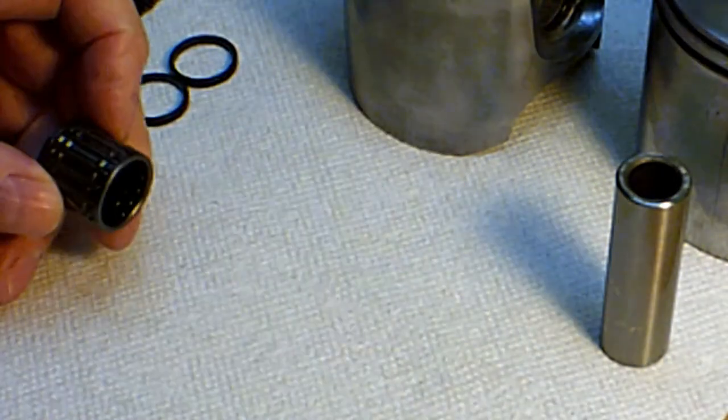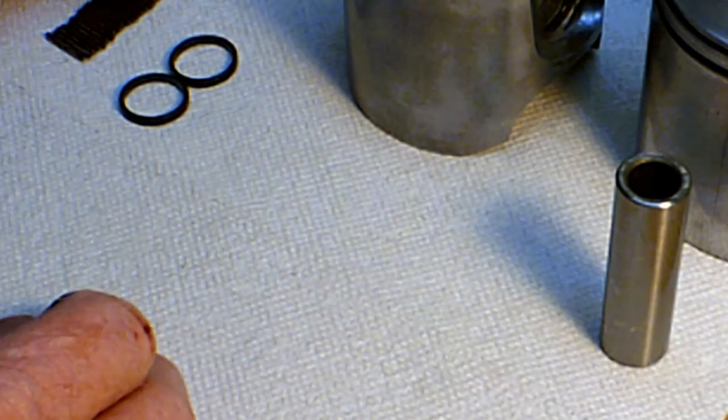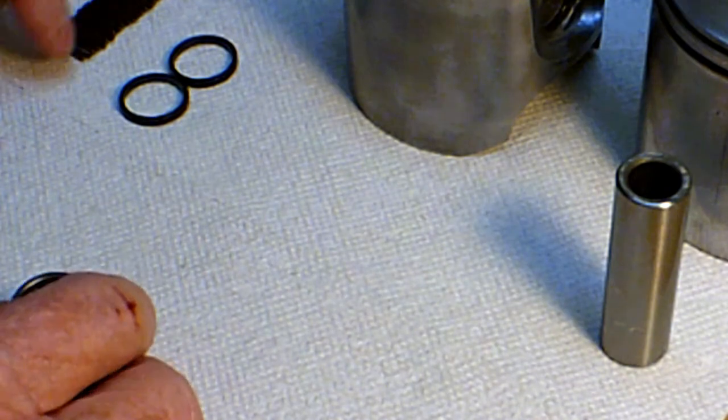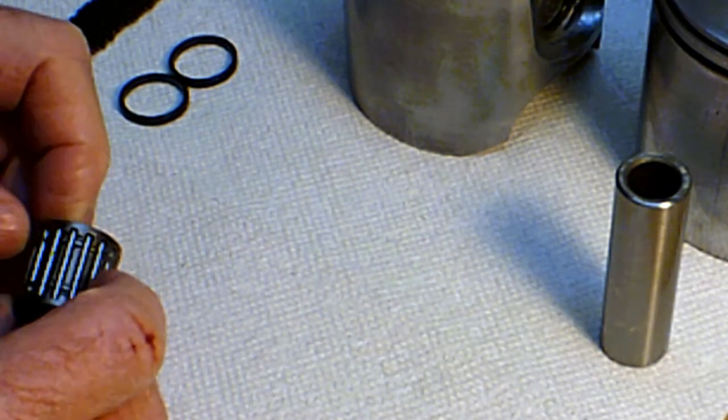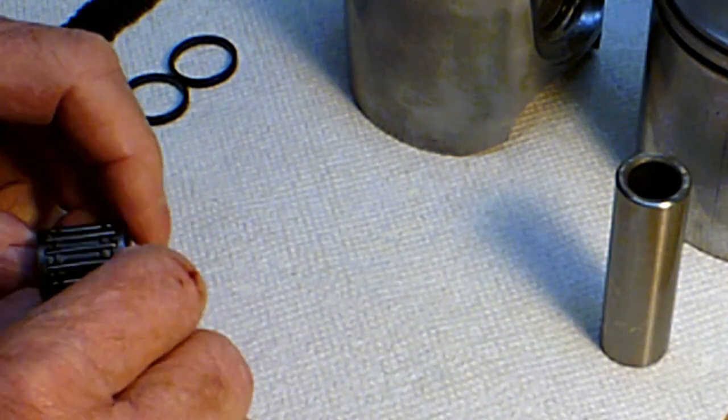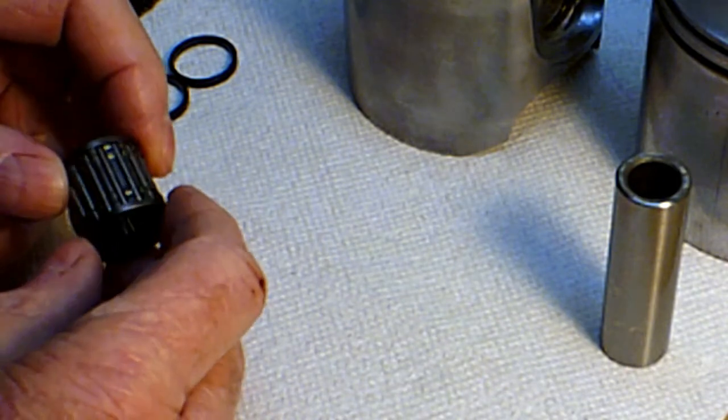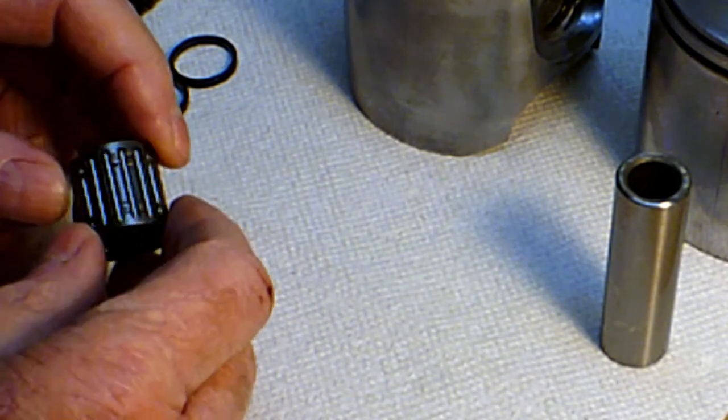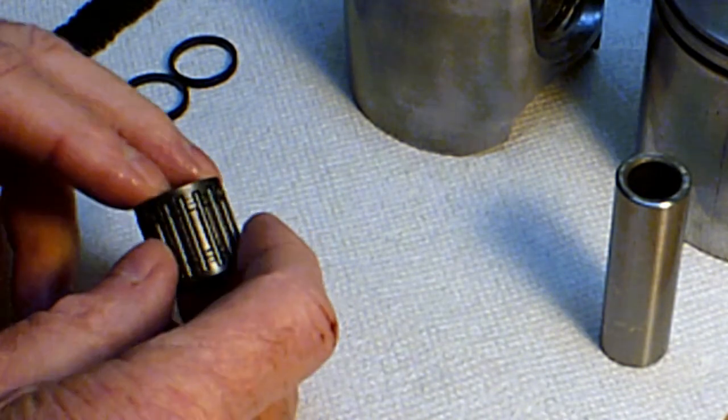The other thing I wanted to point out is that these loose needles, what they call uncaged needles, you might say well that's a cheap way of doing it. Well, it probably is cheap but there's a reason for it. This is a caged bearing and it only has 16 needles in there. So you've got 31 here and only 16 here.